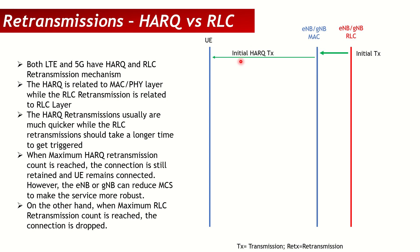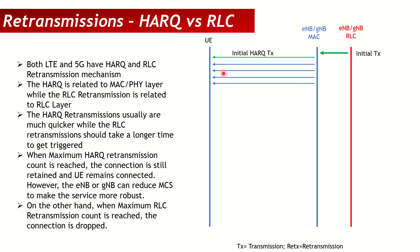If the UE is in a bad radio condition and unable to decode the packet, the UE will send a NAK — a negative acknowledgement. In that case, the MAC layer will initiate retransmissions at the HARQ level. It will send the first retransmission; if that fails, a second HARQ retransmission; if that fails, a third; and if that also fails, a fourth. Normally we have one initial transmission and four retransmissions. If all of them fail, we say the HARQ process for this packet has failed.